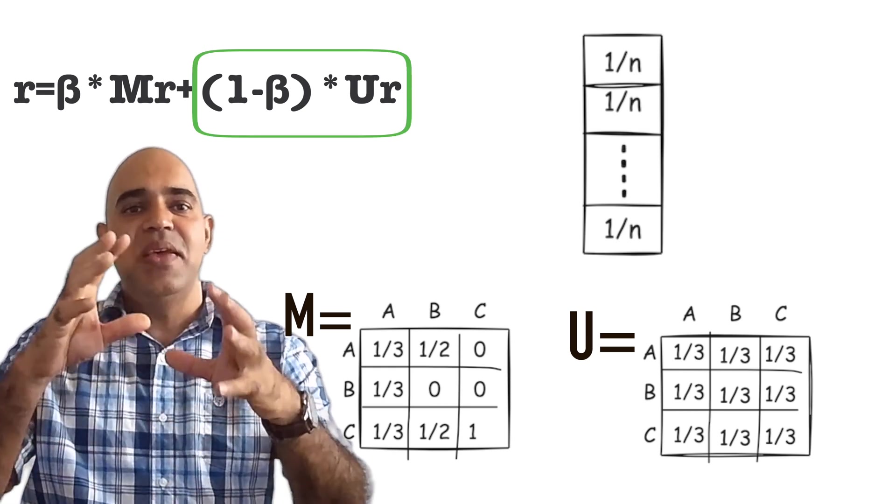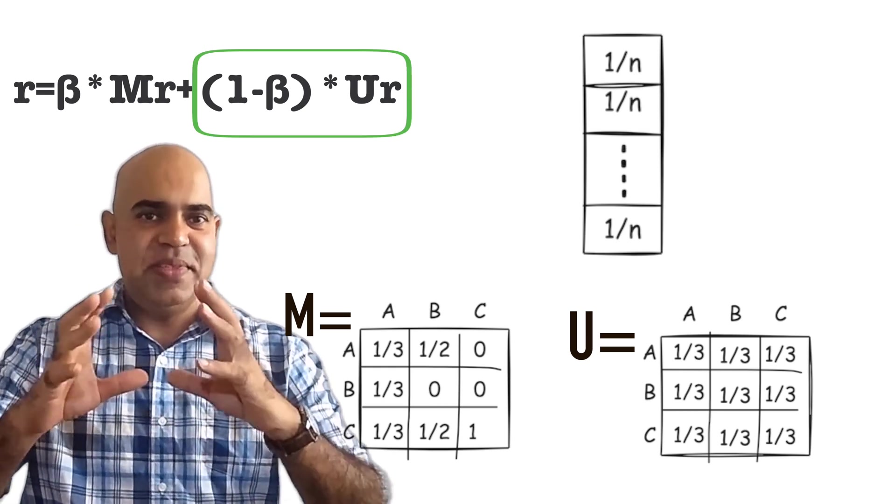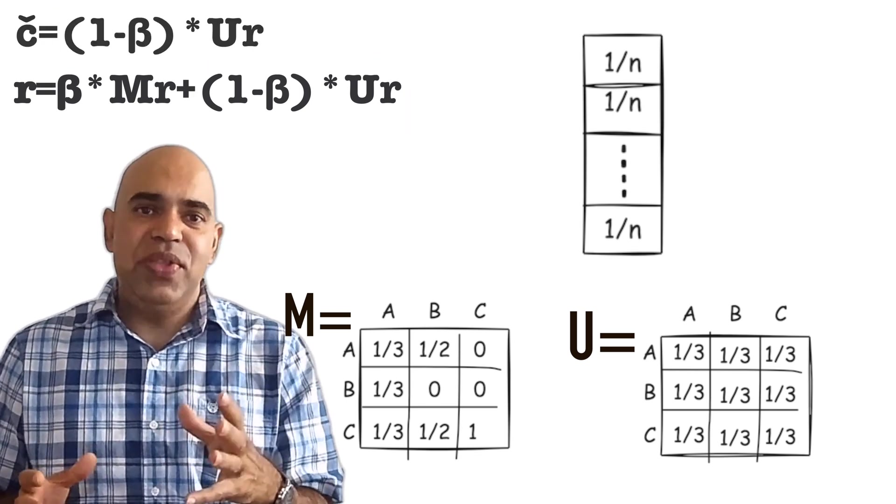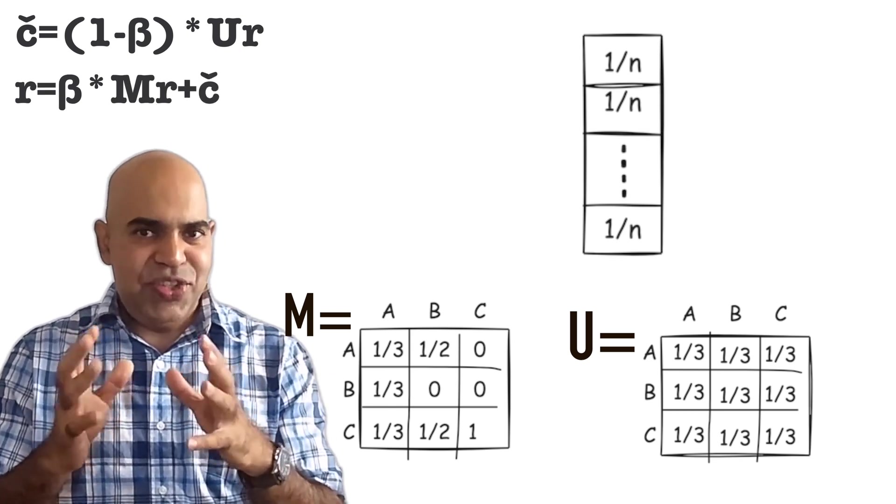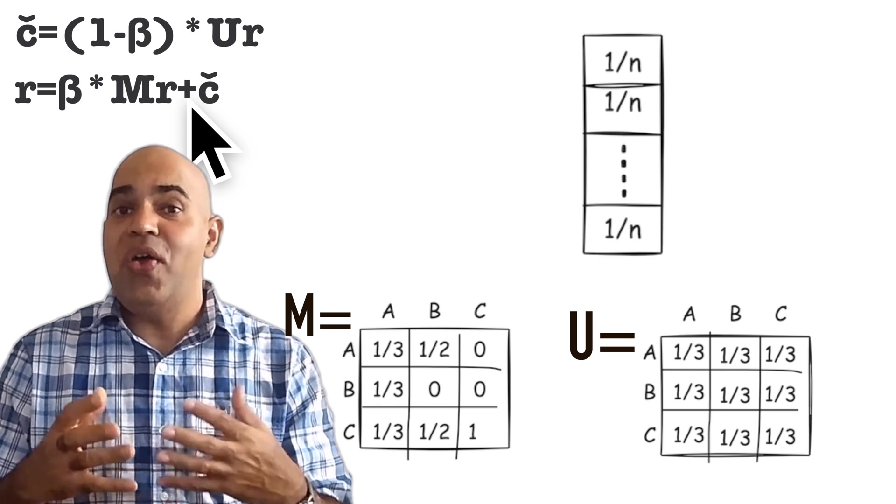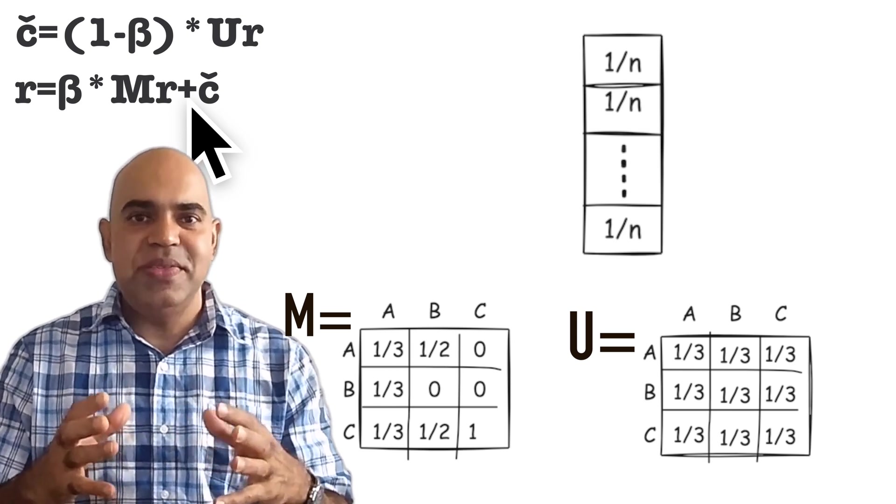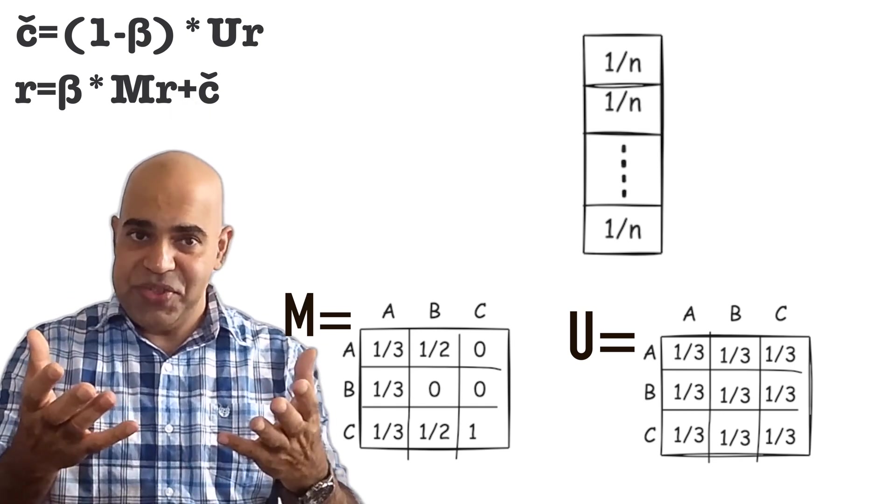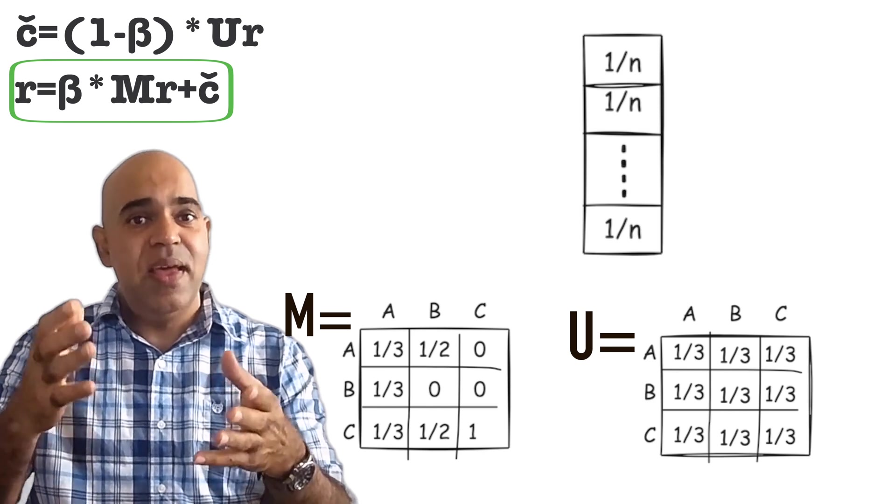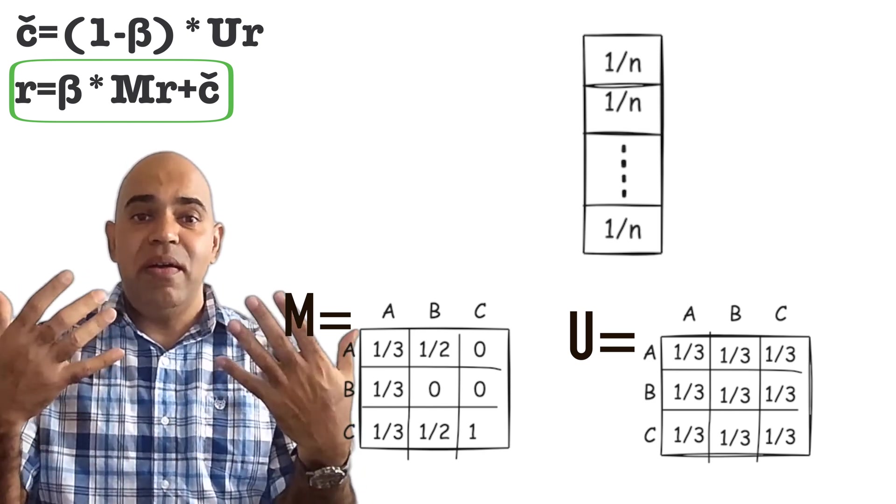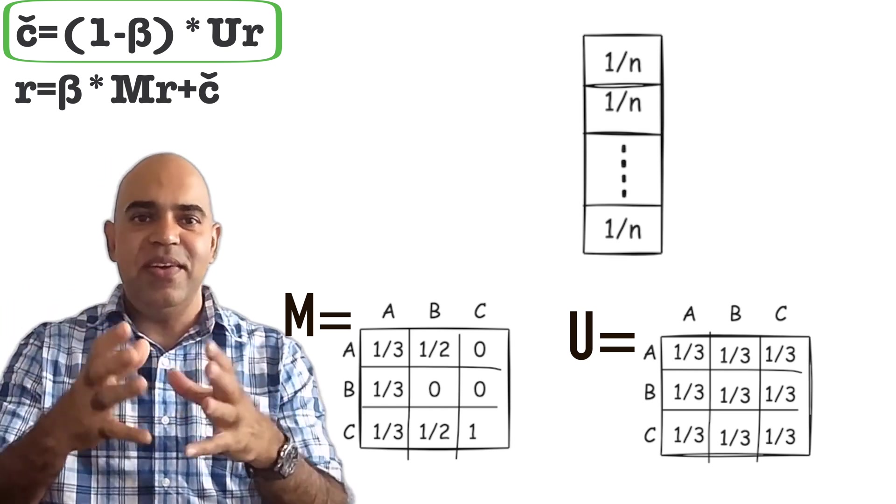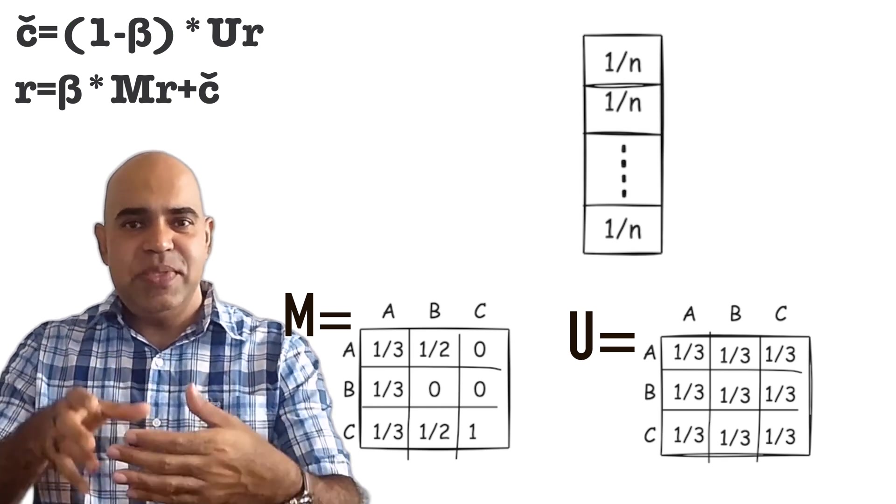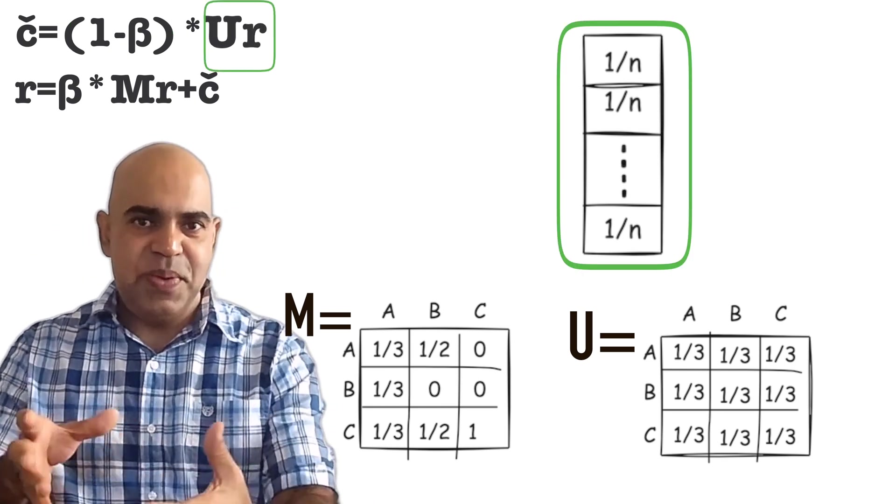Actually, we can just store this 1 minus beta times U times R part in a variable before the iterations and put the variable here. We have just this addition now, which is not that computationally prohibitive because it is the addition of two column vectors. Our equation becomes R equals beta times M times R plus C, where C is a constant for a given internetwork and a given beta. C equals 1 minus beta times a uniform rank vector that sums up to 1.0.